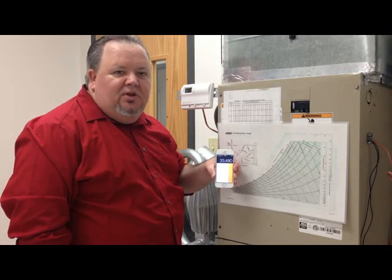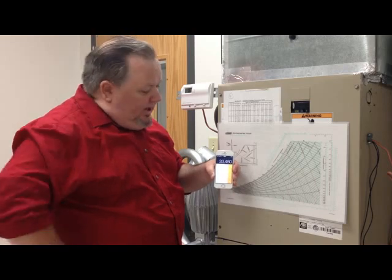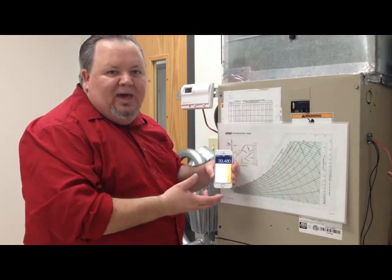Now this is a 3-ton unit. Its nominal BTU capacity should be around 36,000. I can now take a look at what might be causing this drop in capacity.